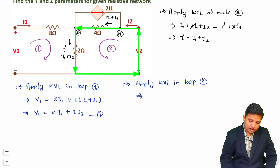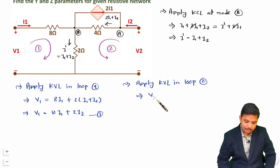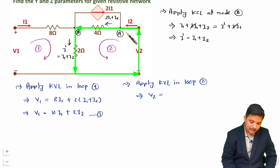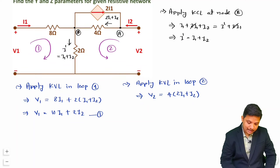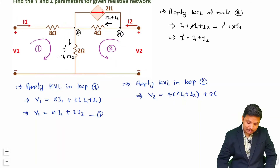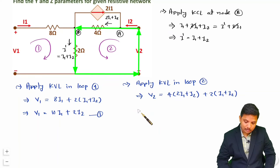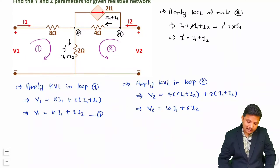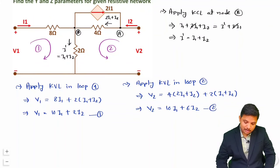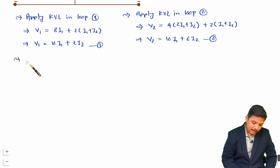Applying KVL in loop 2: V2 is traversed from minus to plus, so plus V2 equals the voltage across the 4-ohm resistor carrying current 2i1 plus i2, plus the voltage across the 2-ohm resistor carrying current i1 plus i2. Simplifying: V2 equals 10·i1 plus 6·i2.